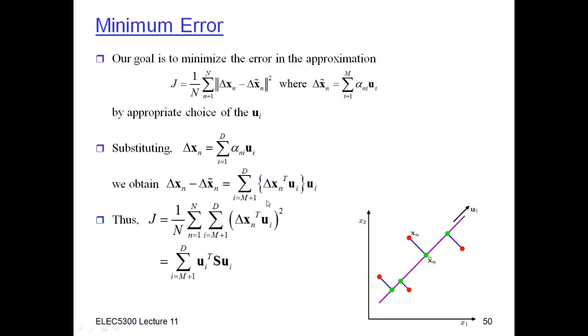So our goal then is to minimize the error in this equation here, J. So this is the average squared error between delta Xn and delta X tilde of N. Now, we know that X tilde of N is just the sum of all the steps in the different directions, U1 through UM, and delta Xn is just the sum over all D. So M here is less than D. But if we take the difference between this delta Xn and this one here, then the difference is just what's ever left over. So all the coefficients here that are not included are all the ones from M plus 1 all the way up to D. And here I'm substituting in that formula for alpha sub Ni.